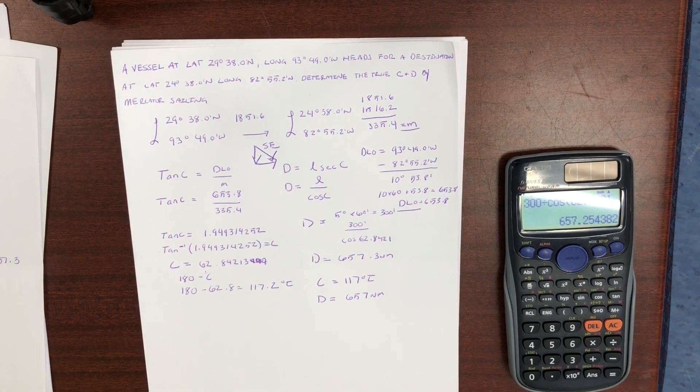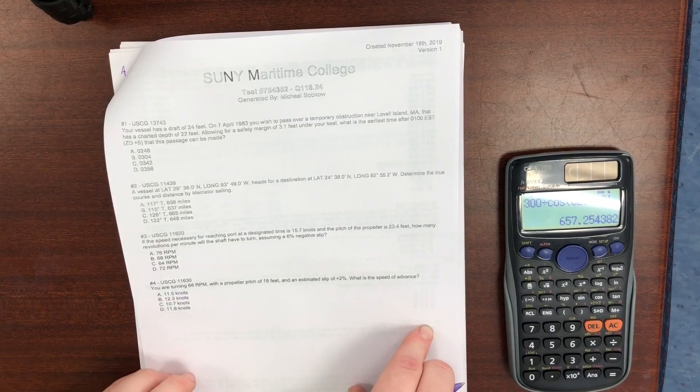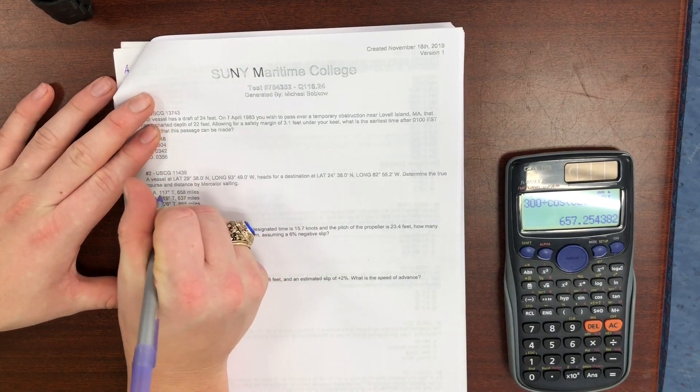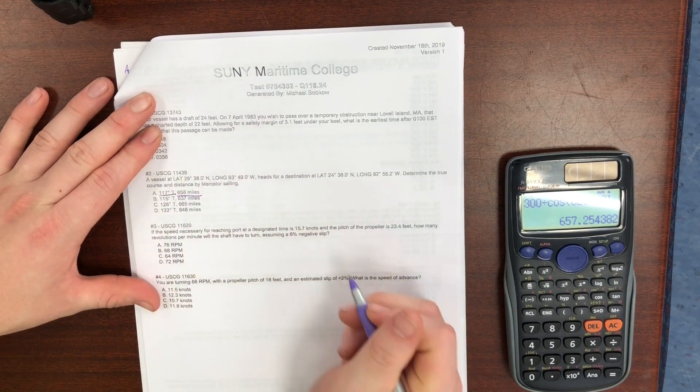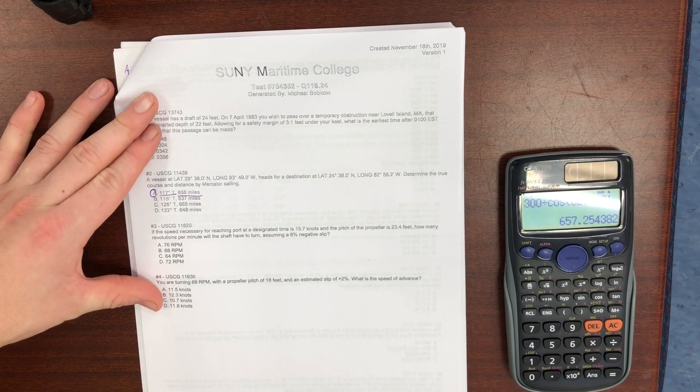Now this question was taken out of the near-coastal Coast Guard bank. As you can see, if we go to our test, we have the answer 117 degrees true, 658 miles. So the answer to our question is A.